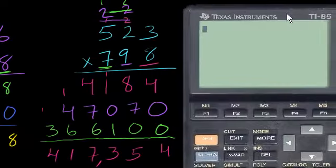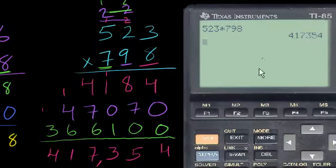And we can even check to make sure. This is the moment of truth. Let's see if we have 523 times 798. There you go. I don't have to rerecord this video. It's 417,354. But we did it without the calculator, which is the important point.